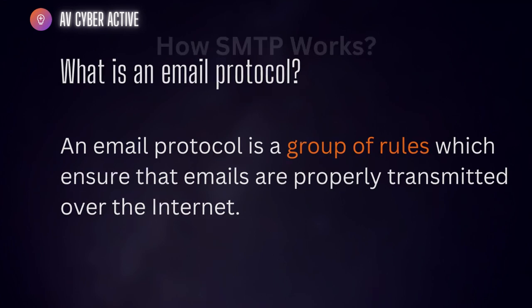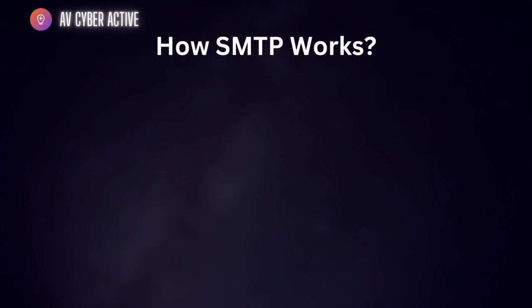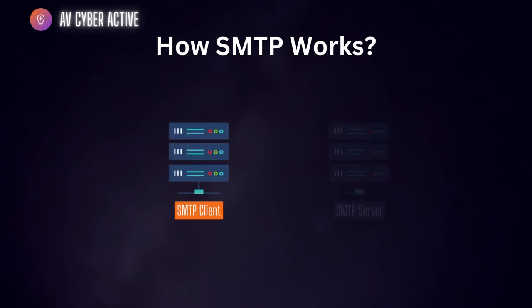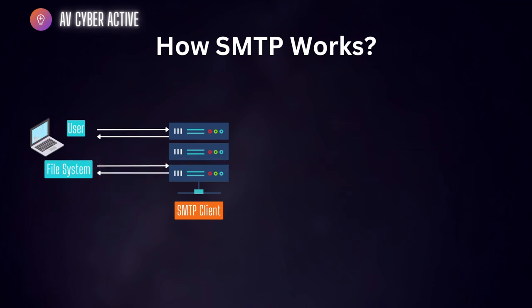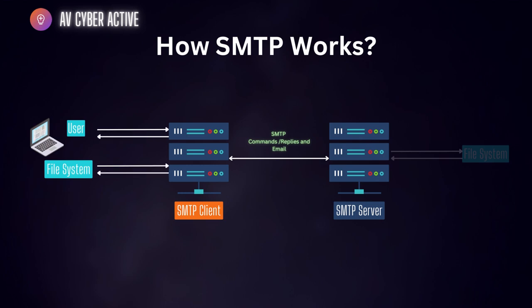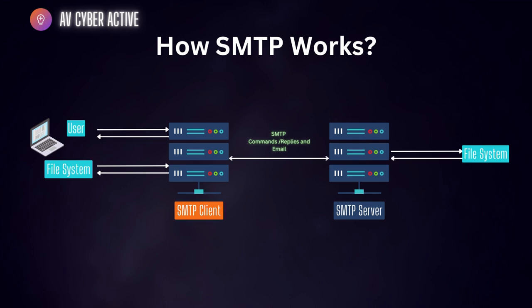Beginning with the first one, that is SMTP and how it works. To give you a visual demonstration: we have our SMTP client, SMTP server, and both file systems. When the user uses their file system to send emails, the SMTP client — which could be Firefox Thunderbird or Microsoft Outlook — collects all that information and pushes it over to an SMTP server. Remember that SMTP works over port 25, which is unsecured, and it is used only for sending emails. The SMTP server then acknowledges receipt of the email and sends replies to emails it has received from a different file system.